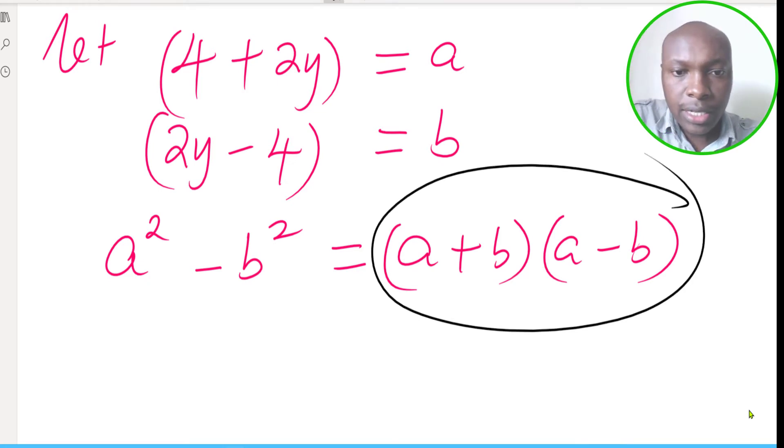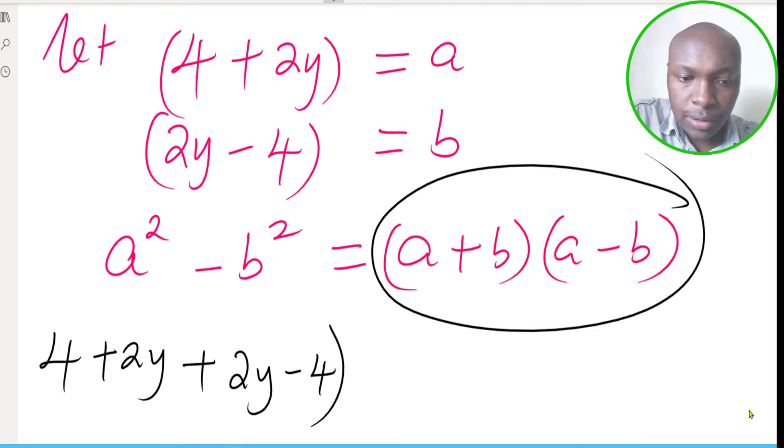a is (4 + 2y), this is a, 4 + 2y, then plus b. b is 2y - 4. That is you get that is (a + b), and then multiply by (a - b).